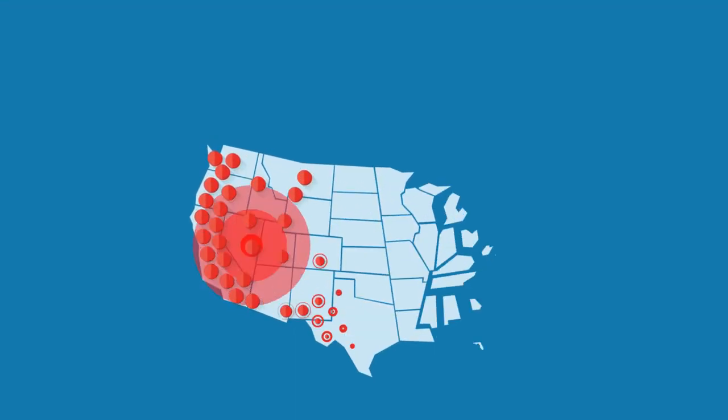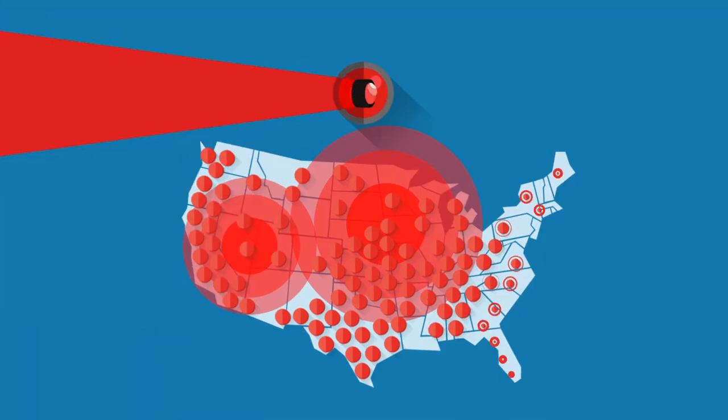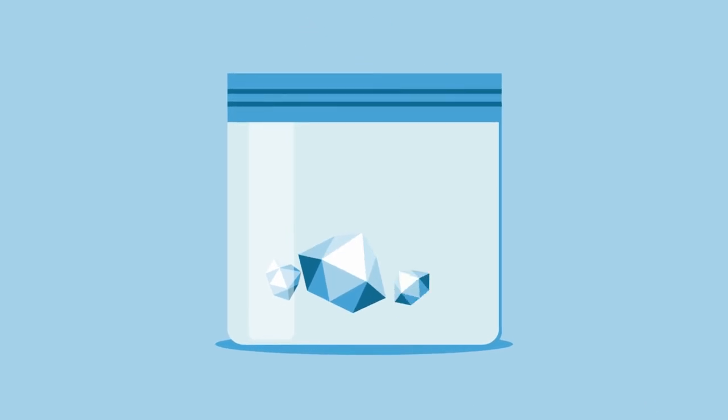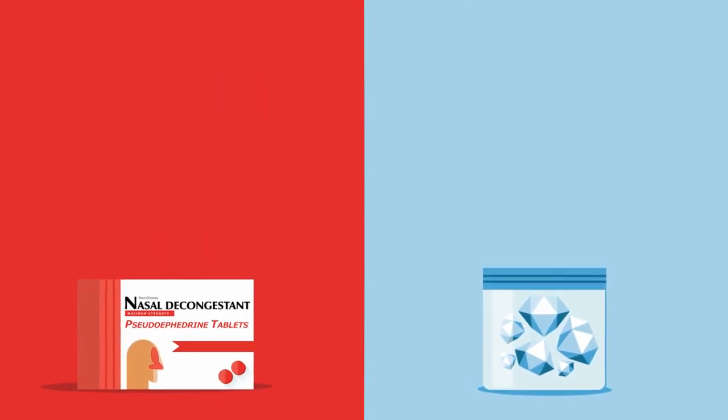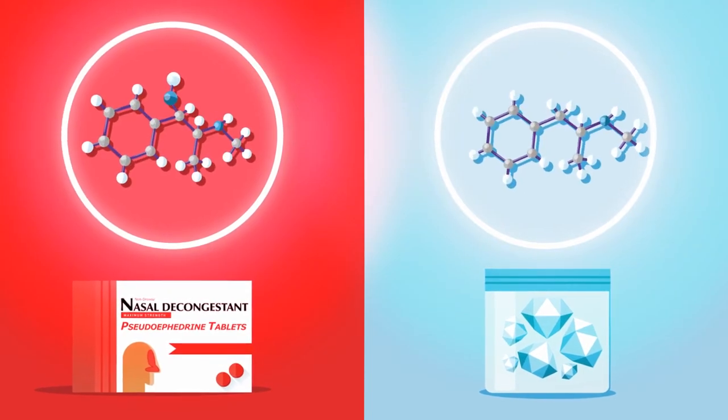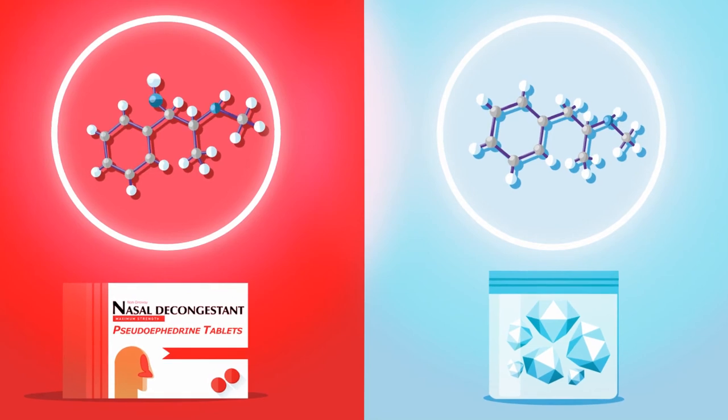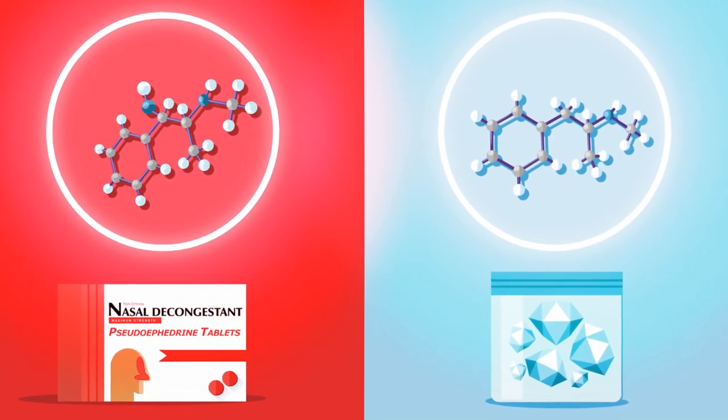But did you know there's an ongoing battle over the availability of Sudafedrin products and their diversion for use in making meth? It's because Sudafedrin is such a critical ingredient needed to make meth. Sudafedrin and meth have a surprisingly similar chemical structure, making it rather simple to convert to meth, which is why Sudafedrin is in high demand among meth cooks.